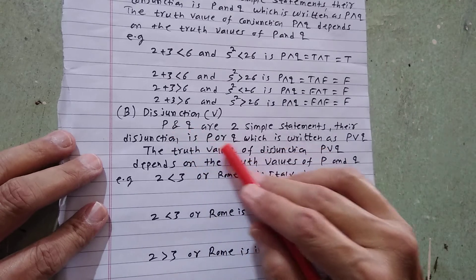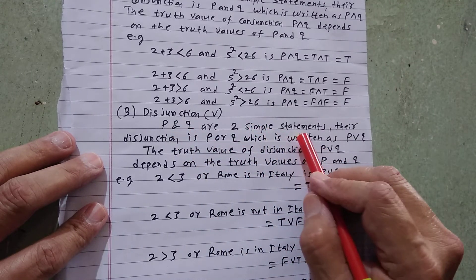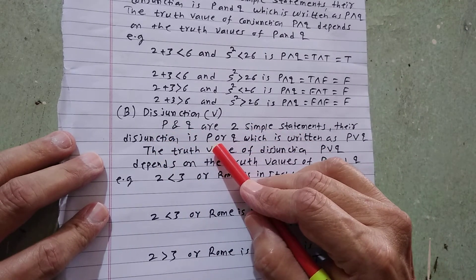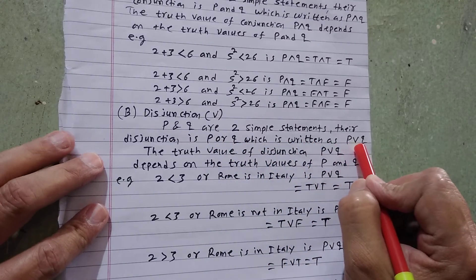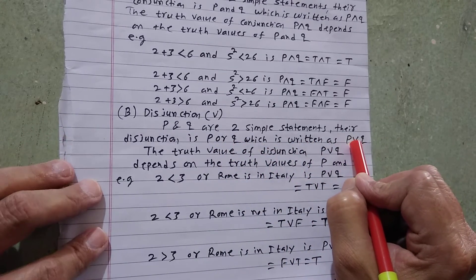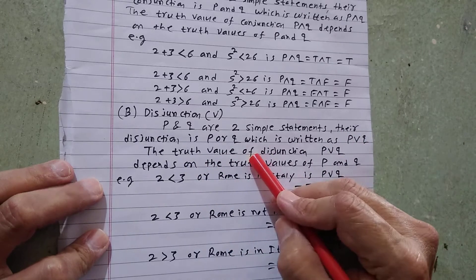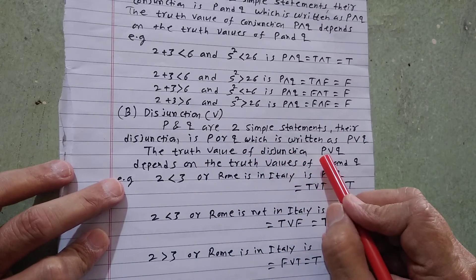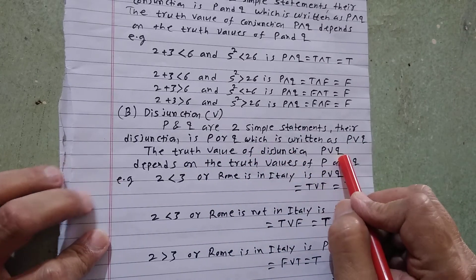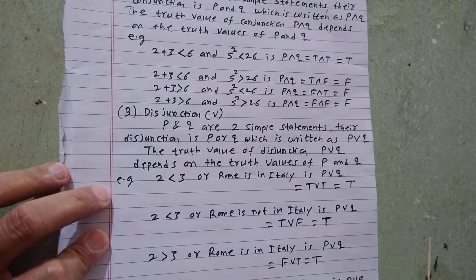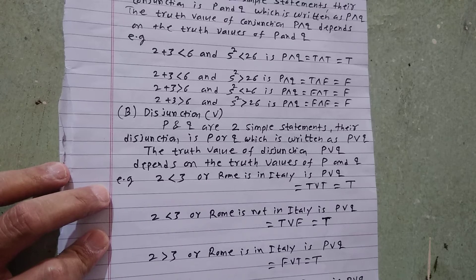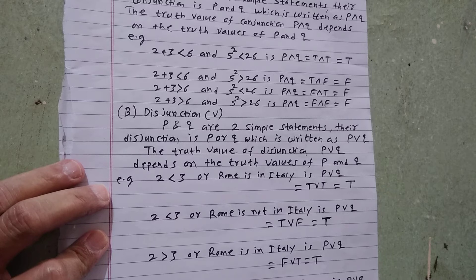Now disjunction: P and Q are the two simple statements, and their disjunction is P OR Q, which is written as P V Q. V is the symbol for OR. The truth value of the disjunction P OR Q depends on the truth values of P and Q, and each statement will have either a true or false value — in-between results are not allowed.